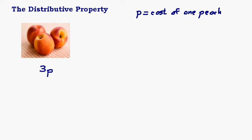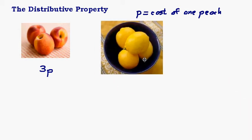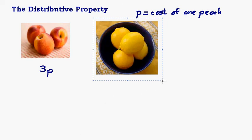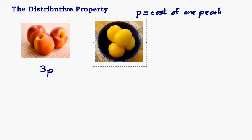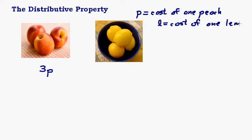Now let's say for the same recipe I am to purchase four lemons. Let's let L equal the cost of one lemon. So how much would these four lemons cost? That would be four times the cost of one lemon. So I've got three peaches and four lemons, and the total cost of all this fruit would be attained by adding these two terms together: the cost of the peaches plus the cost of the lemons. That would be an expression for the cost of all this fruit.